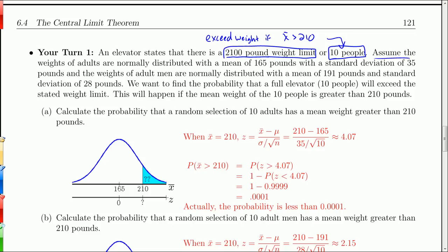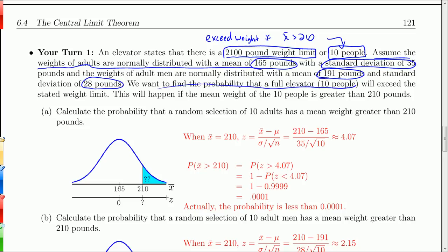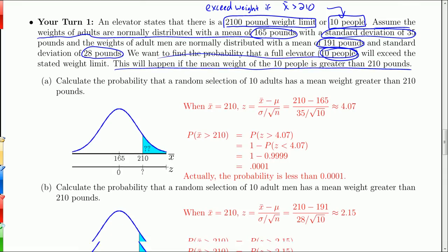We'll consider two scenarios. From data, the weights of adults are normally distributed with a mean of 165 and a standard deviation of 35. Adult men have a mean of 191 and a standard deviation of 28. Obviously adult men weigh more on average than adults in general, since men are heavier than women in general. We want to find the probability that a full elevator of 10 people will exceed the weight limit — which happens if the mean weight of the 10 people is greater than 210.